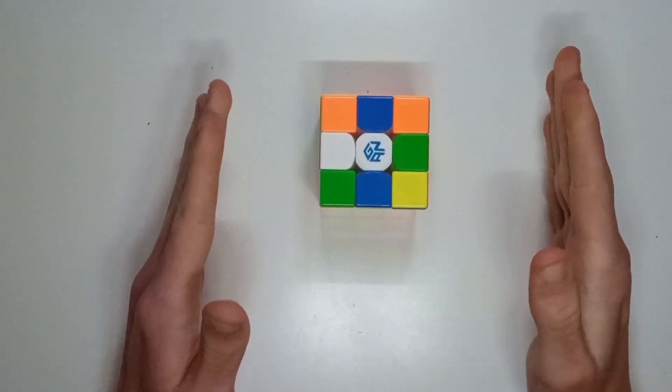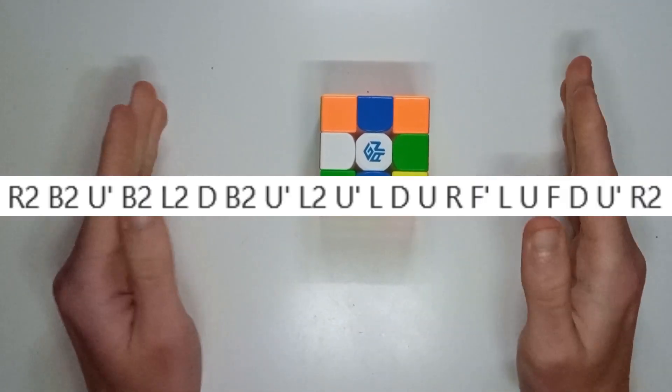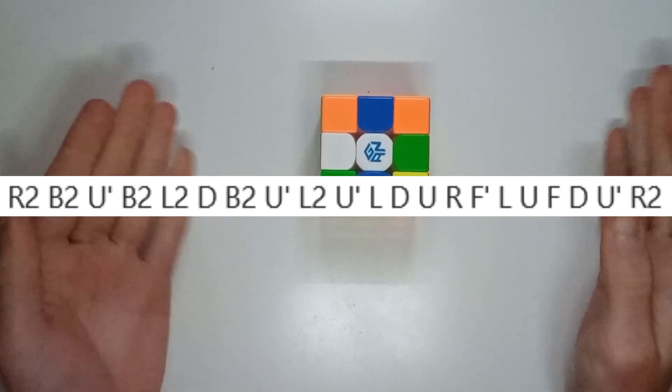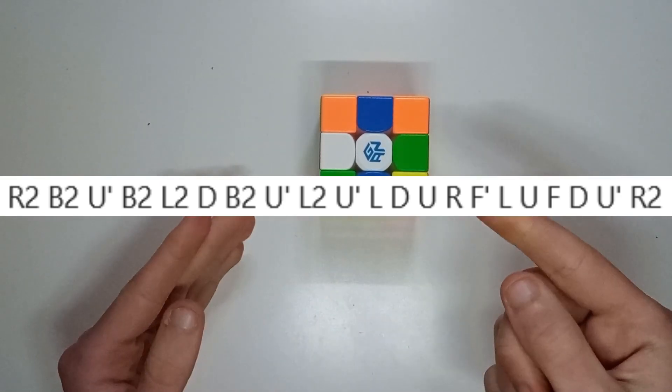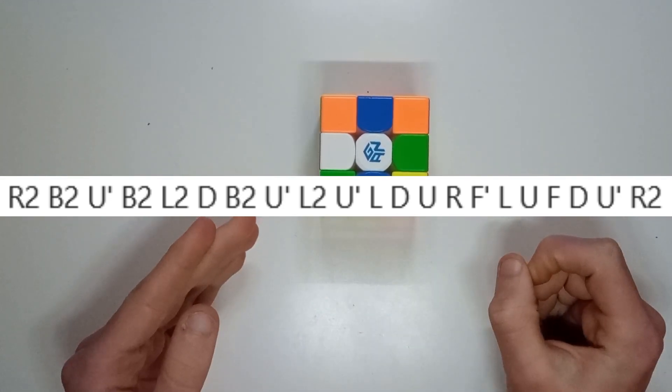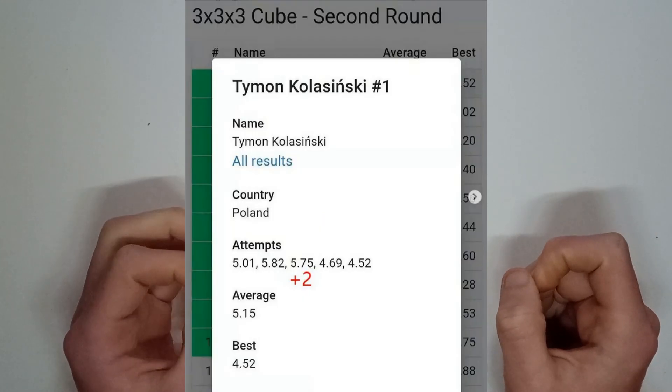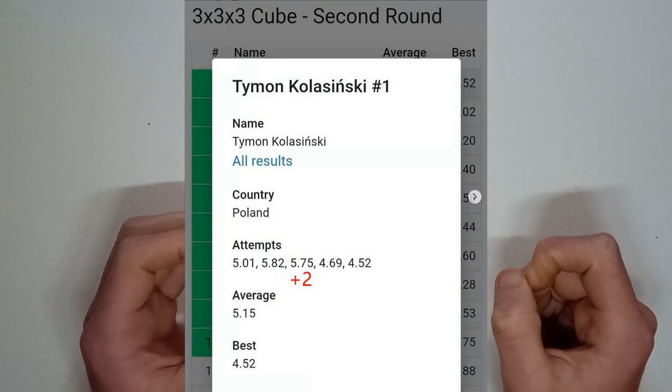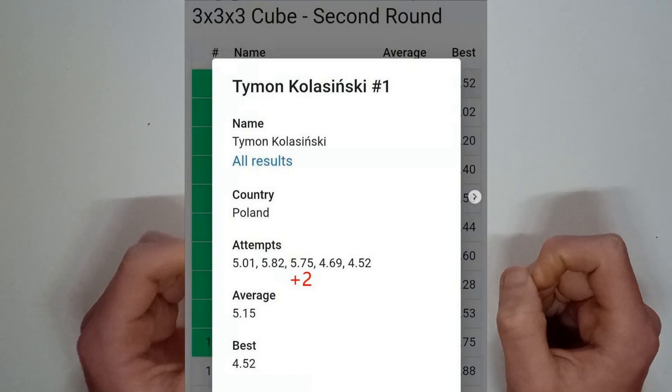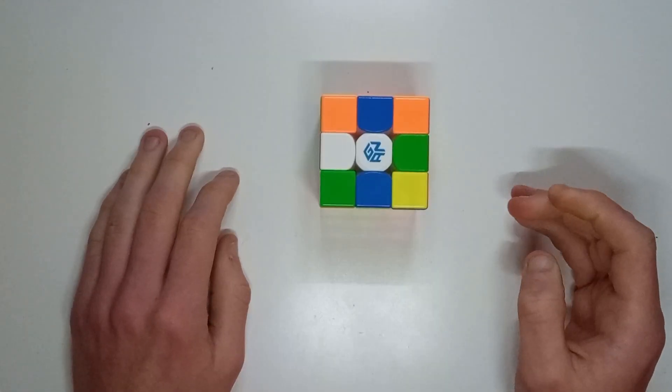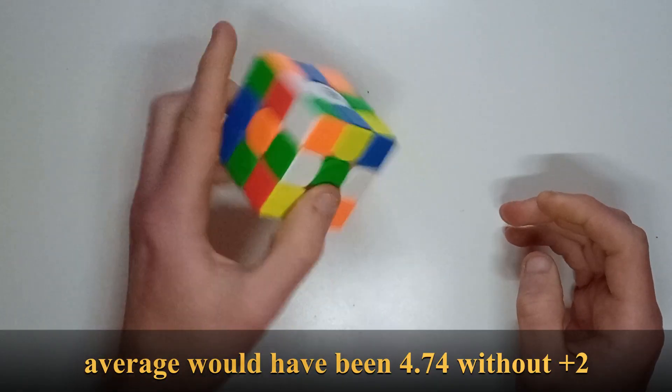So just yesterday Tymon Kolosinski got very close to, firstly getting a sub-5 average and secondly getting the second ever sub-4 single officially. Unfortunately it was a plus 2, and a very close plus 2 as well, only slightly over 45 degrees off, but I'm gonna go over the scramble and analyze it a bit.